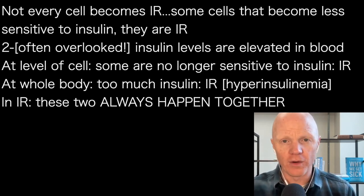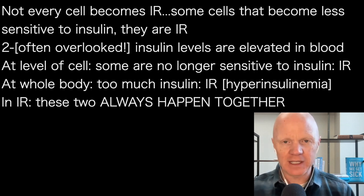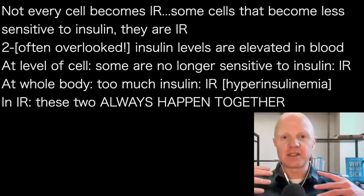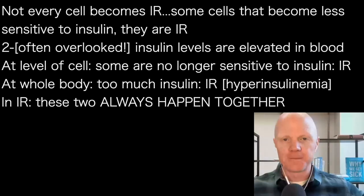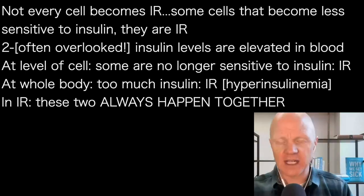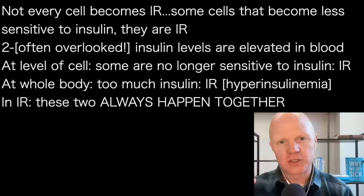We can flip that coin over, because there's another aspect of insulin resistance — and this is the part that is so totally overlooked — and that is that in every instance of insulin resistance, with one exception we'll talk about at a future classroom, insulin levels will also be elevated in the blood. So, going from the level of the cell to the level of the whole body: at the cell there is selective insulin resistance, and at the whole body level this is manifested as an elevated insulin level. Insulin resistance and hyperinsulinemia — which is the technical term for elevated blood insulin — are inseparable.